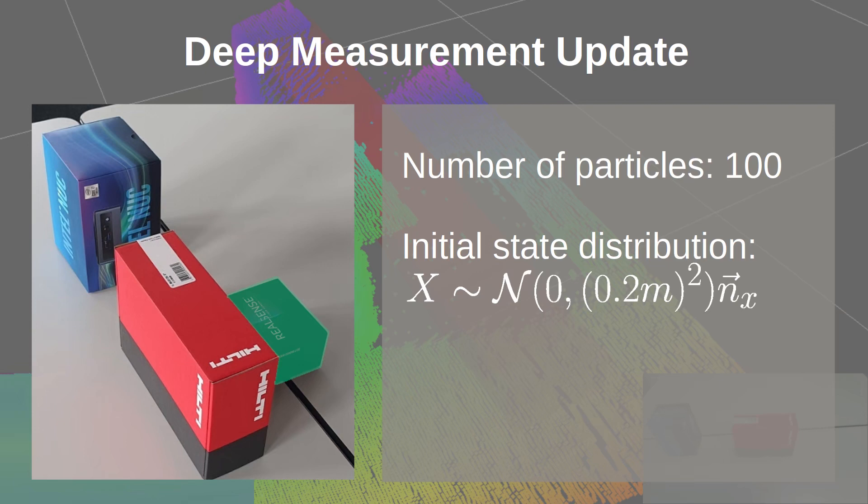We use a particle filter to estimate the pose of a box, highlighted in green. The box is hidden behind an obstacle and not visible to the depth sensor.